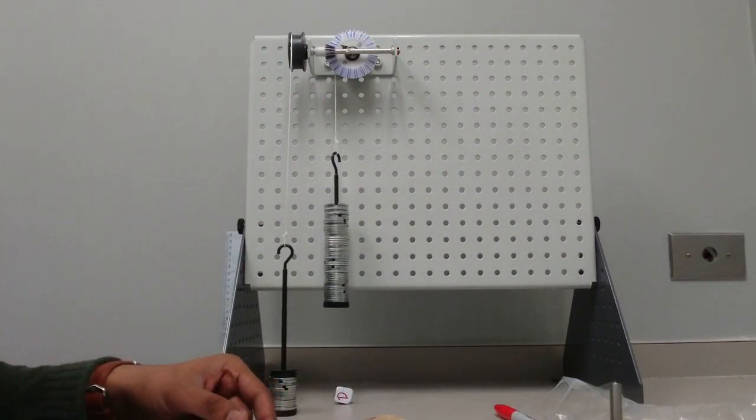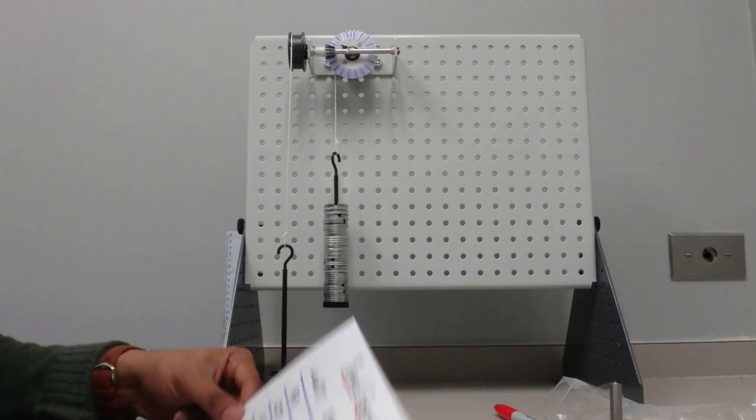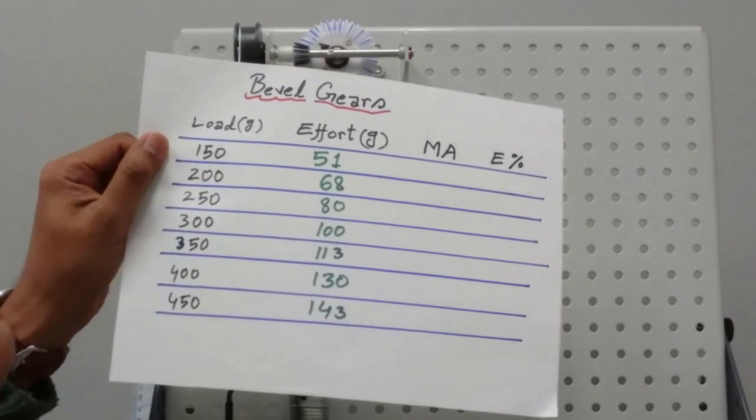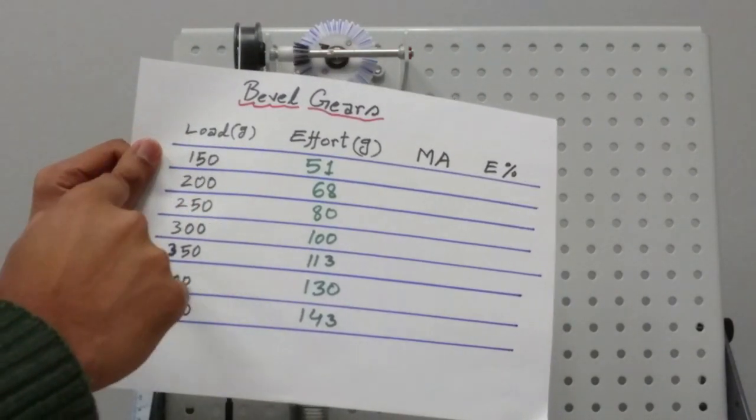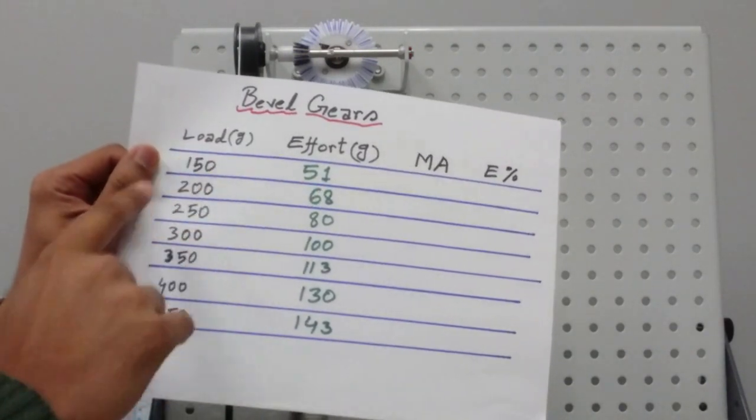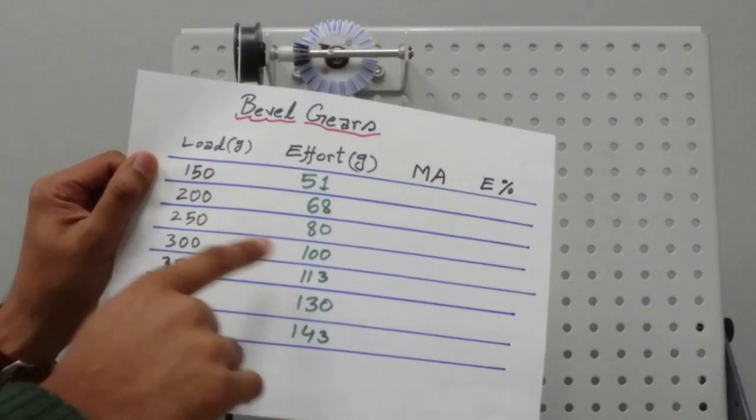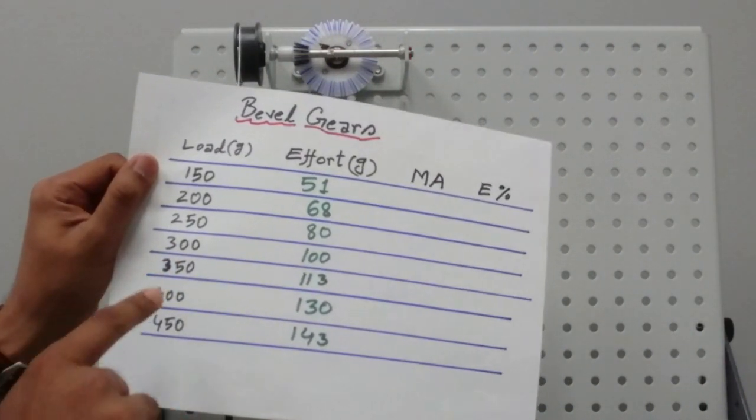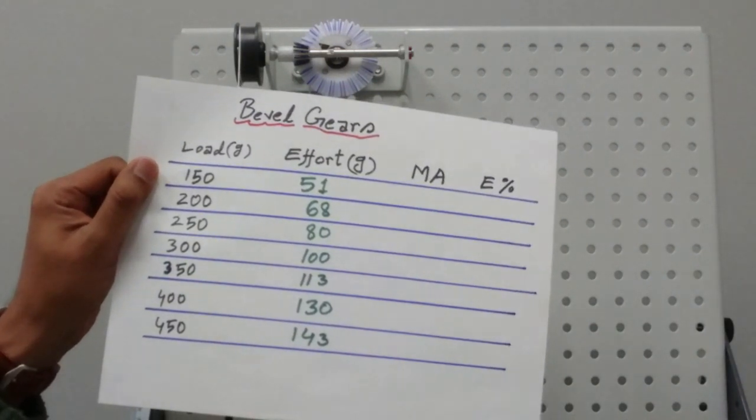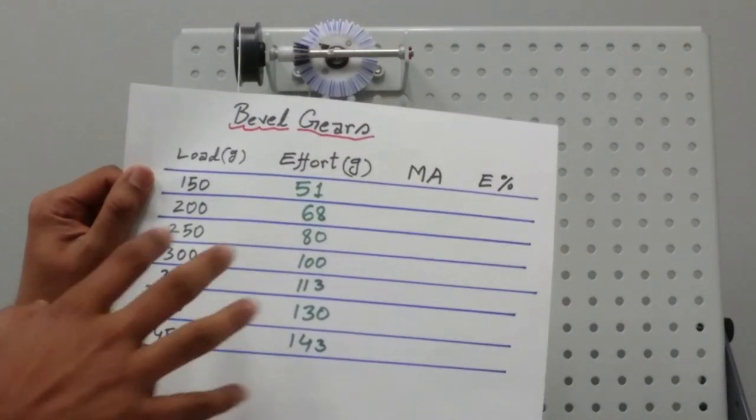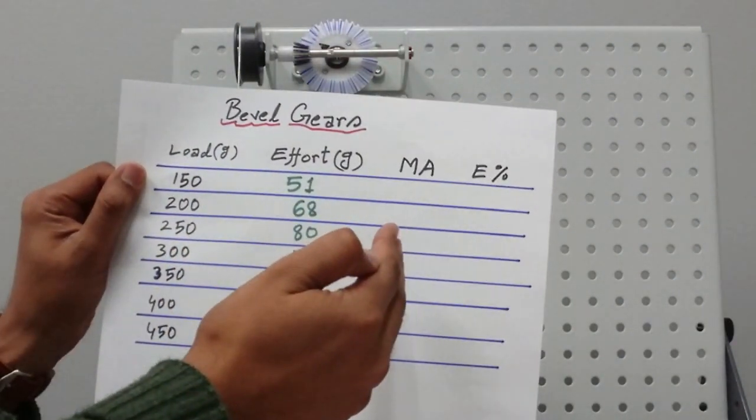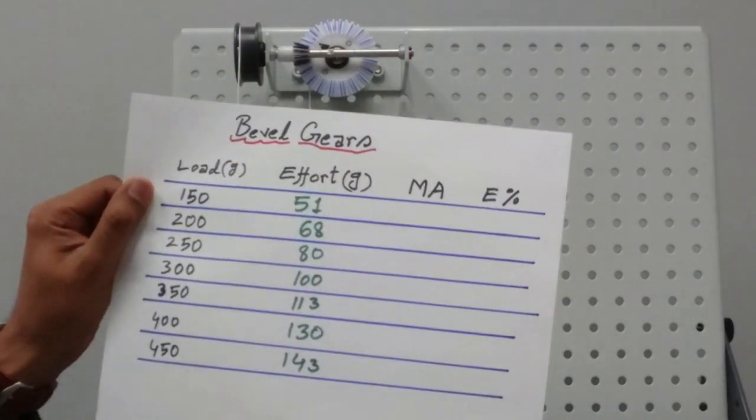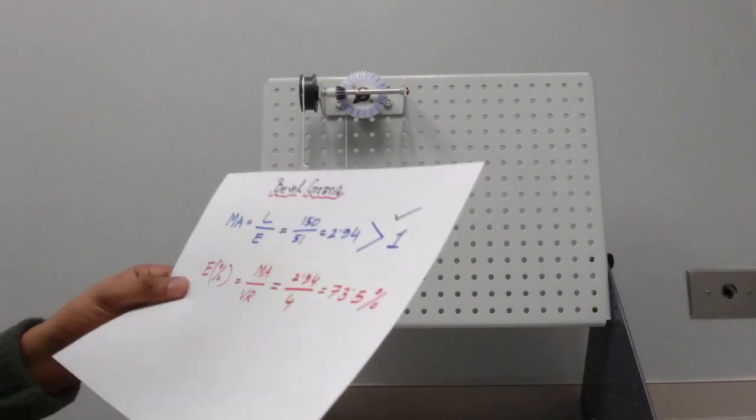We have finished all the tests. So now here are the results. For the loads of 150, 200, 250, 300, 350, 400, and 450, we have the efforts: for 150, 51; for 200, 68; for 250, 80; for 300 grams load, 100 grams effort; for 350, 113; and then for 400 and 450, I have 130 and 143 effort. So now we're going to use this data to find mechanical advantage and efficiency for each case, and then we're going to plot this scenario to see a curve.